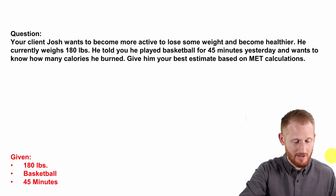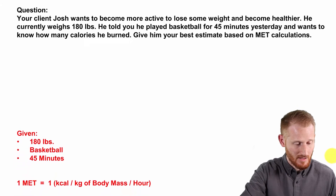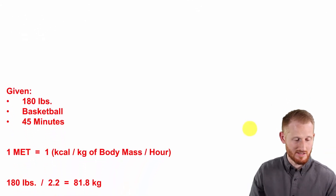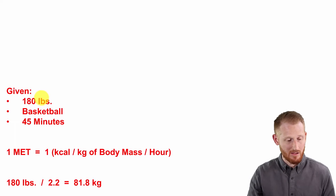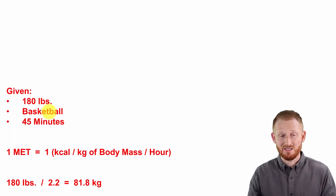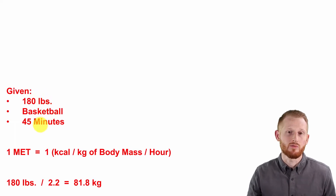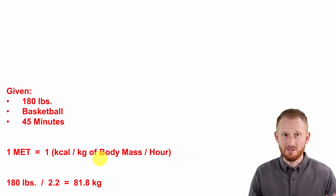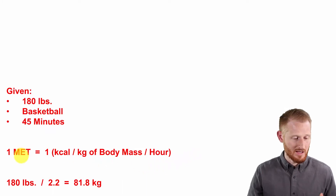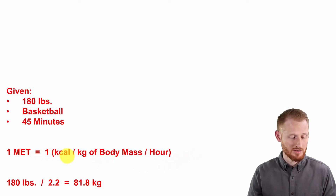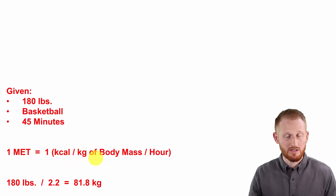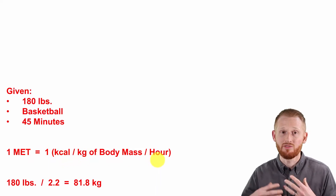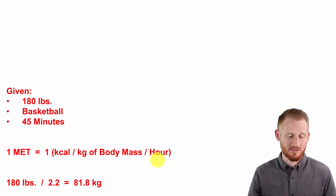Let's talk about how to do this. Our given information is that he weighs 180 pounds, that he played basketball, and he did it for 45 minutes. One thing you need to know is that a MET is equal to one kilocalorie per kilogram of body mass per hour of that activity, whatever the activity is.